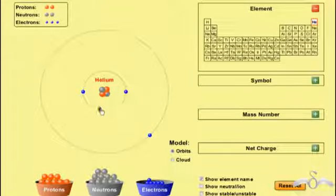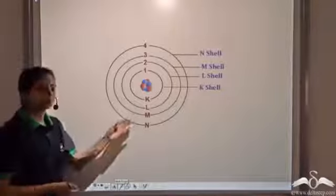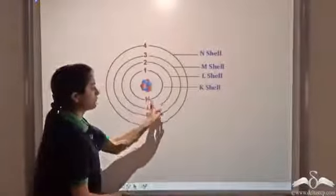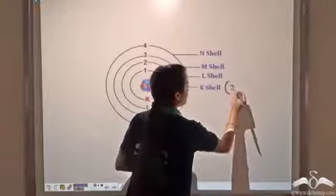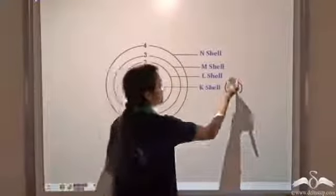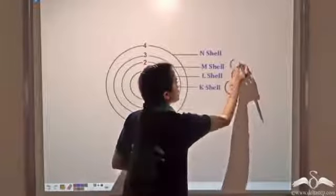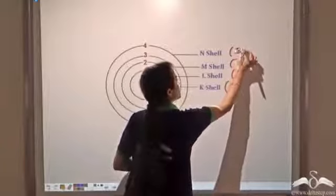Similarly, if we add one more electron, it also takes position in the second shell. To remember the names given to these shells: the first shell is known as the K shell and can have a maximum of 2 electrons. The second shell, the L shell, can have a maximum of 8 electrons. The M shell can have 18, the N shell 32, and so on.